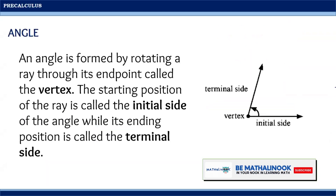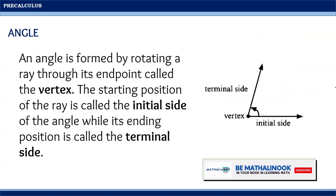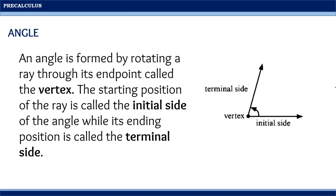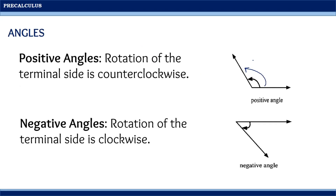An angle is formed by rotating a ray through its endpoint called the vertex. The starting position of the ray is called the initial side of the angle, while its ending position is called the terminal side. Positive angles are formed when the rotation of the terminal side is counterclockwise. On the other hand, negative angles are formed when the rotation of the terminal side is clockwise.